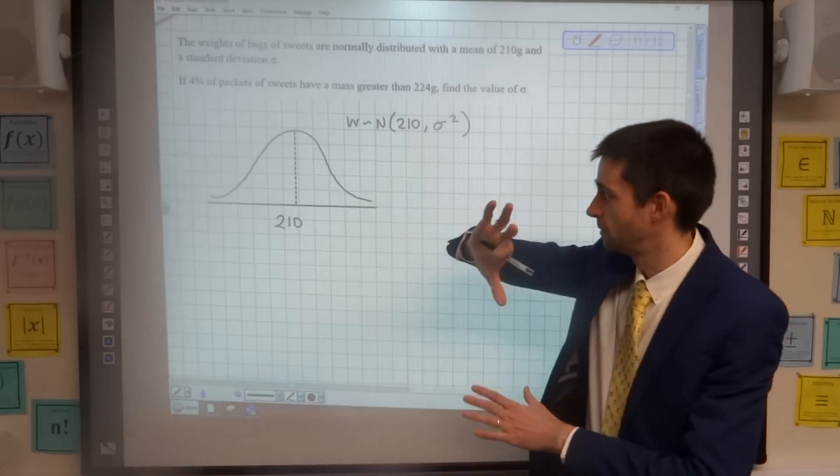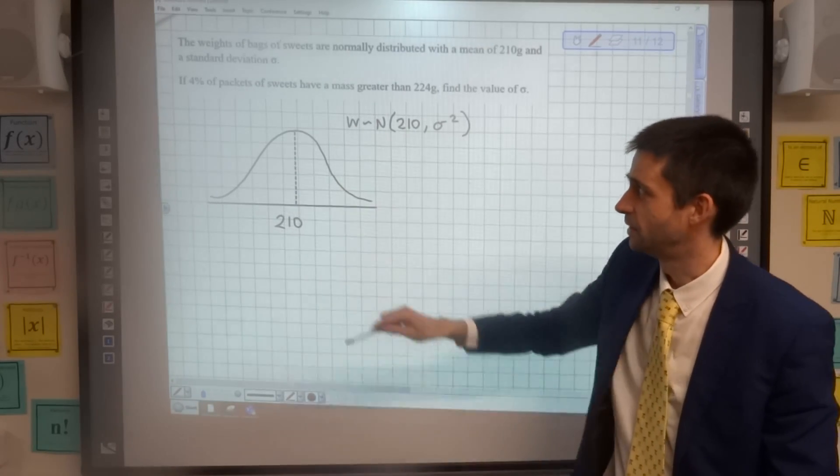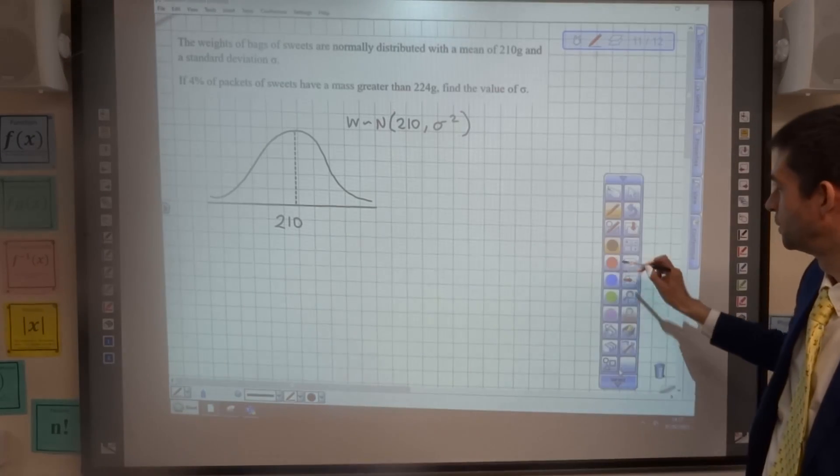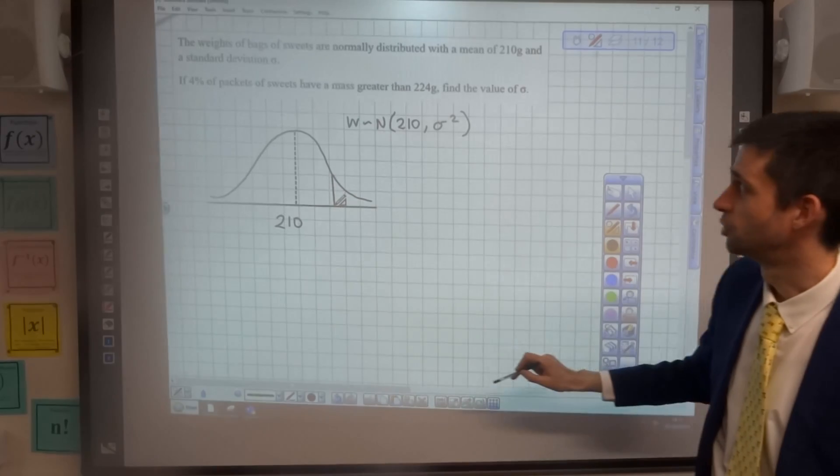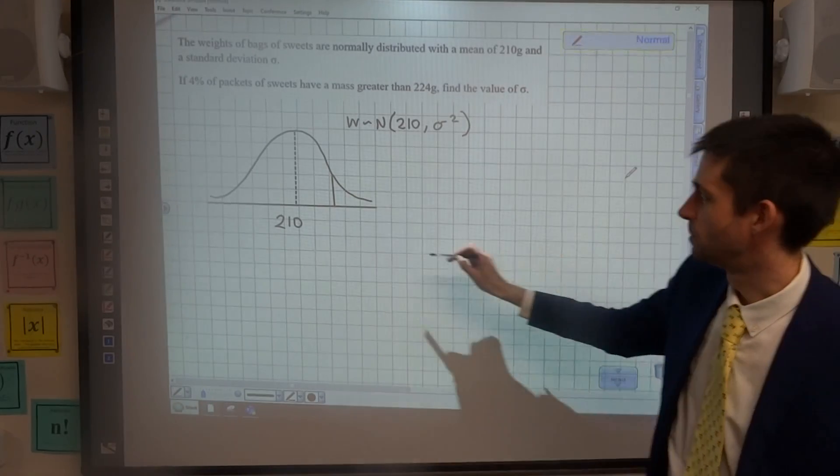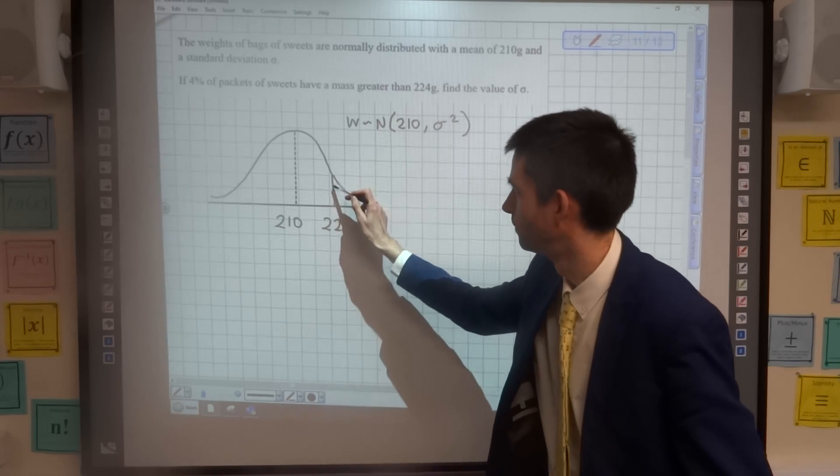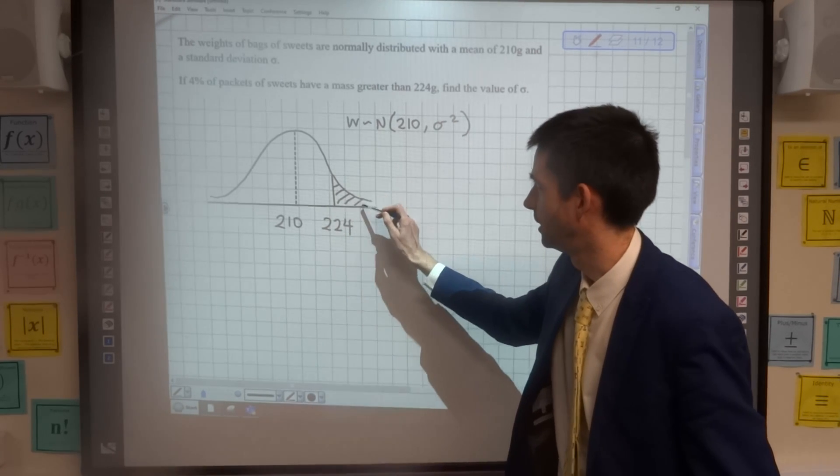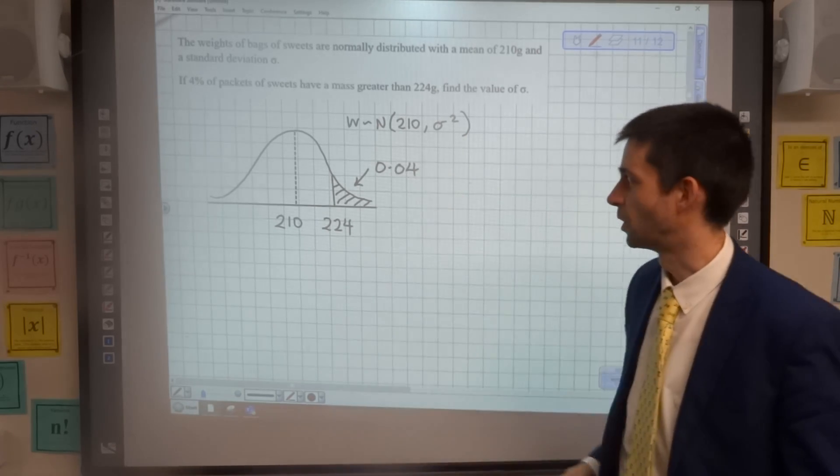I've drawn out the normal distribution curve, I've popped the middle line in, 210 for the mean. And what I'm being told in the question here is that the probability of being greater than 224 is 4%. So I'll put a line here at 224 and shade in this area here. I know that the area of this bit is 0.04.